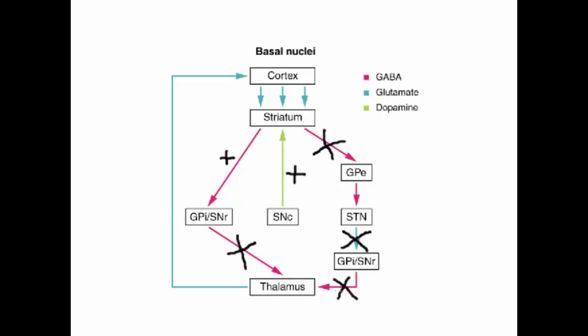The subthalamic nucleus normally releases an excitatory neurotransmitter, glutamate, to the globus pallidus interna and substantia nigra reticularis, causing them to release more GABA to inhibit the thalamus. But we've just stopped that. So there's less GABA being released to the thalamus, which lets the thalamus send more glutamate fibers to the cortex — more excitation of the cortex. That's what happens when the substantia nigra pars compacta is more active.